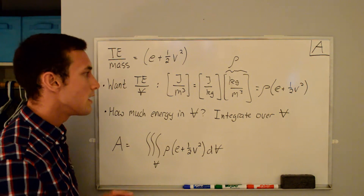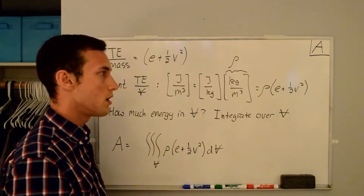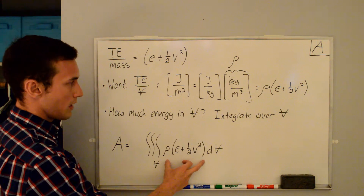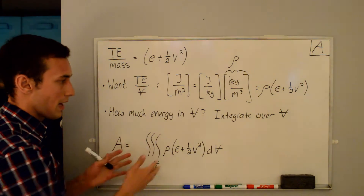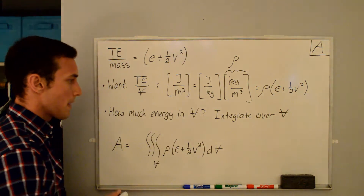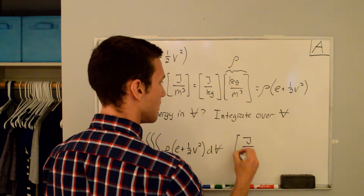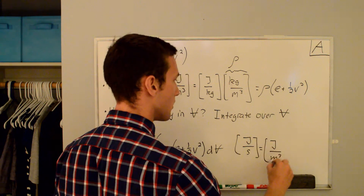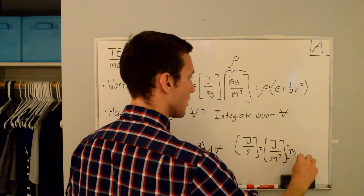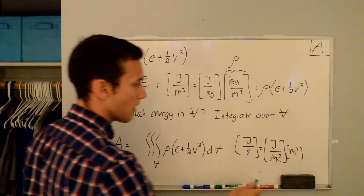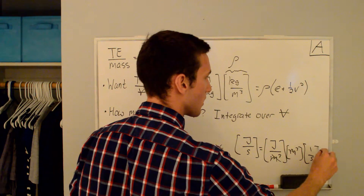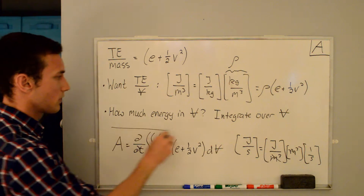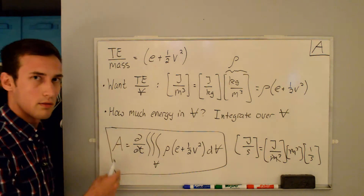To find how much energy is inside the volume, we take the total energy per unit volume and integrate over the volume — just adding up all the little pieces inside. Integrating rho(e + ½v²) over V gives us the total energy inside the control volume. We want this in energy per unit time [J/s], so we take the time derivative. This gives us our first integral term: the time derivative of the triple integral over V of rho(e + ½v²) dV. This is term A.